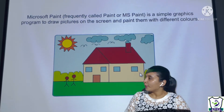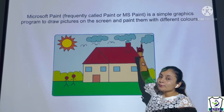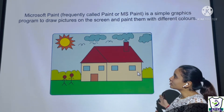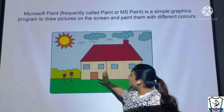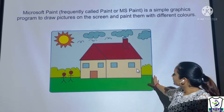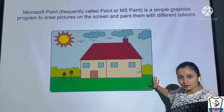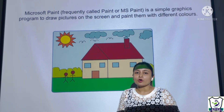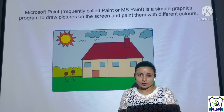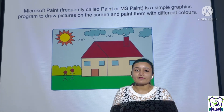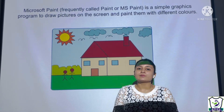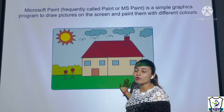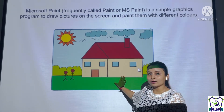Microsoft Paint, frequently called Paint or MS Paint, is a simple graphics program to draw pictures on the screen and paint them with different colors. It is a graphics program which can draw different pictures on our screen and fill them with colors.